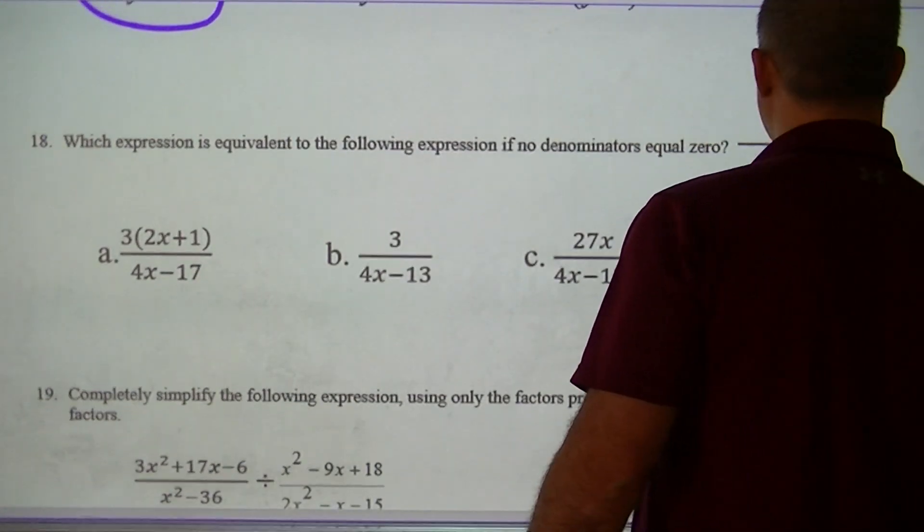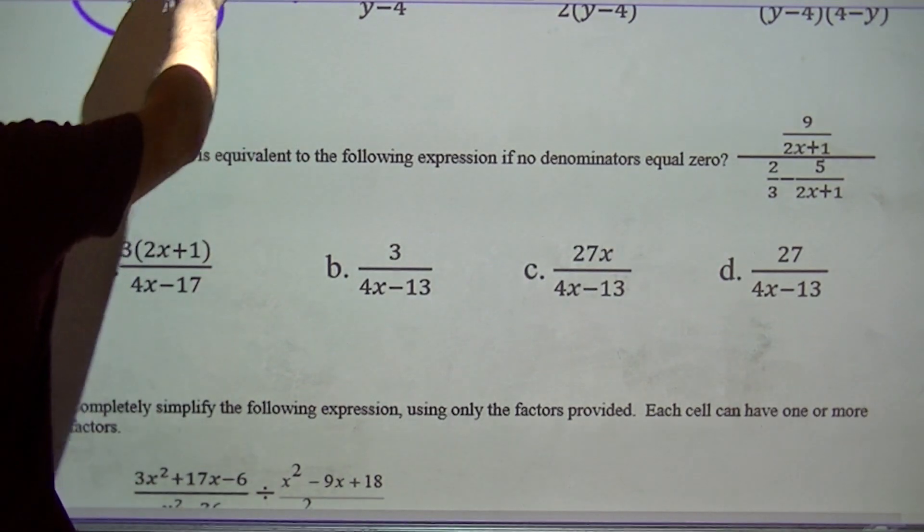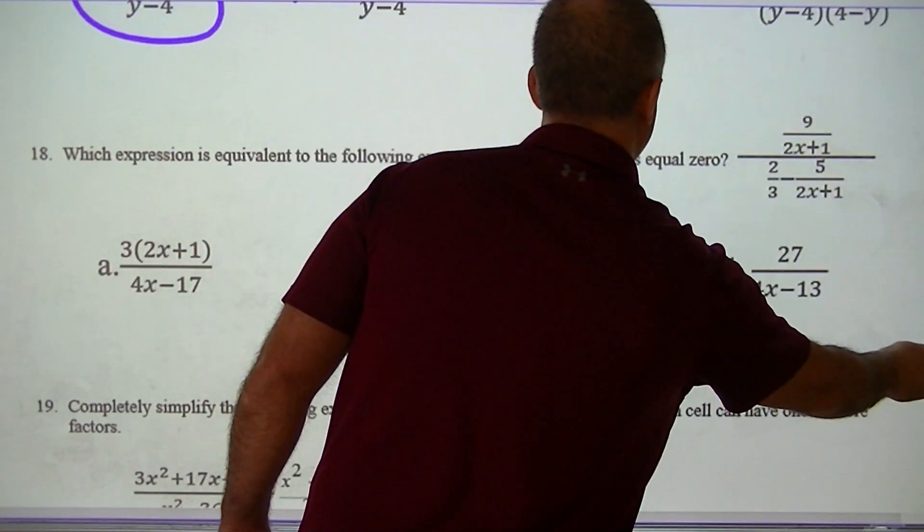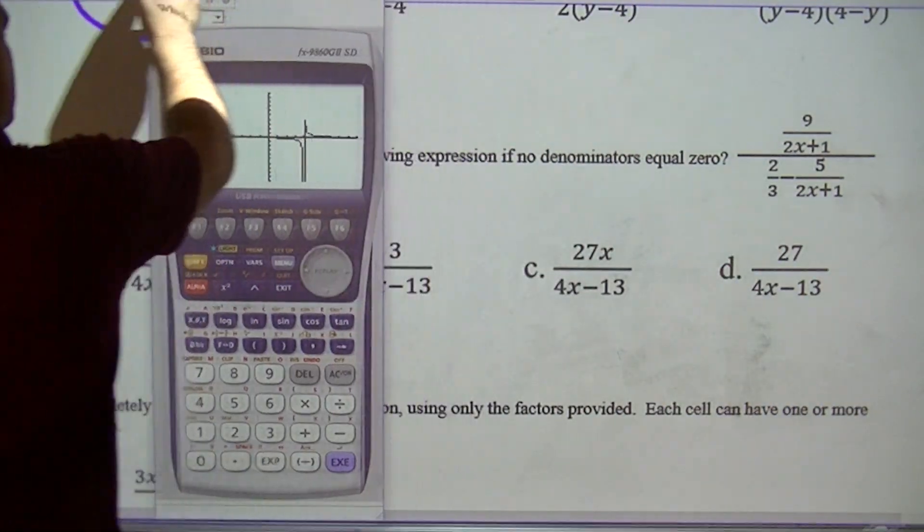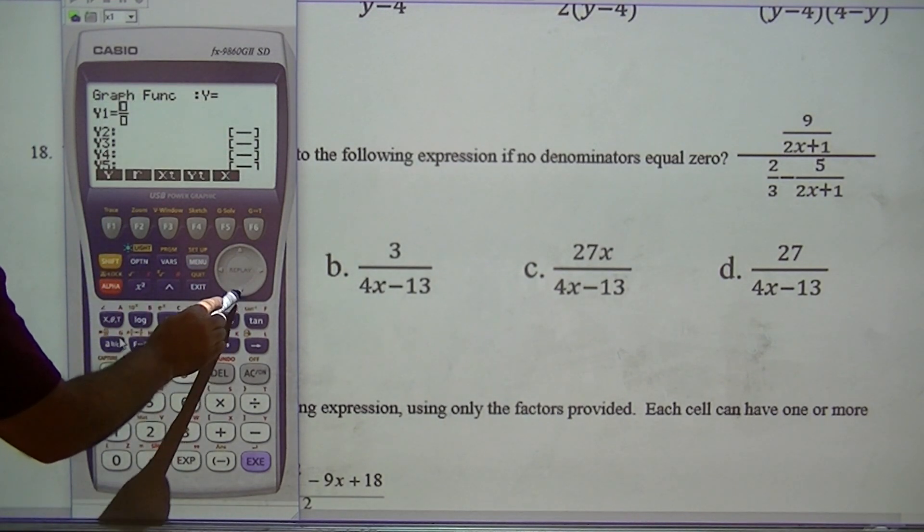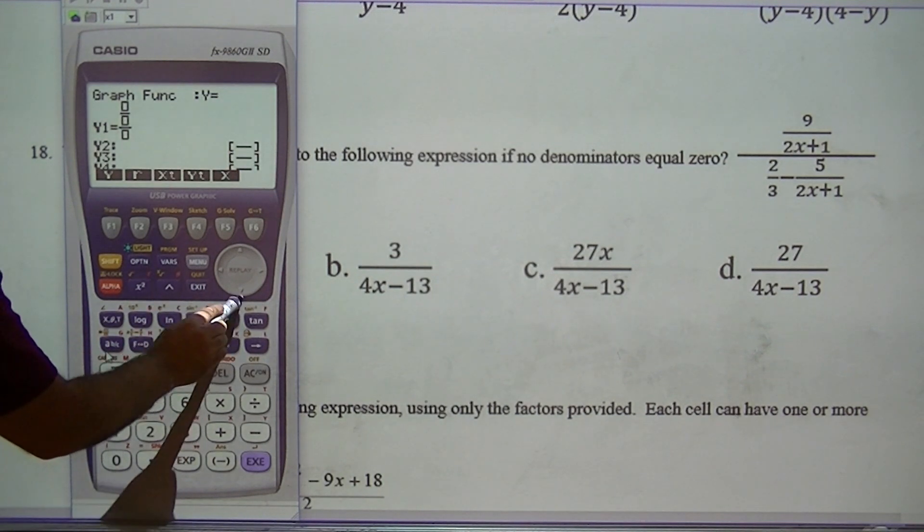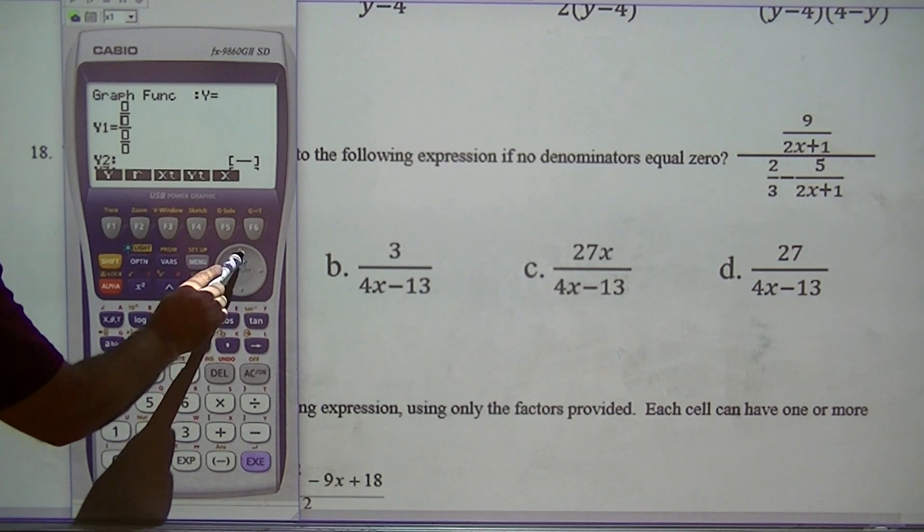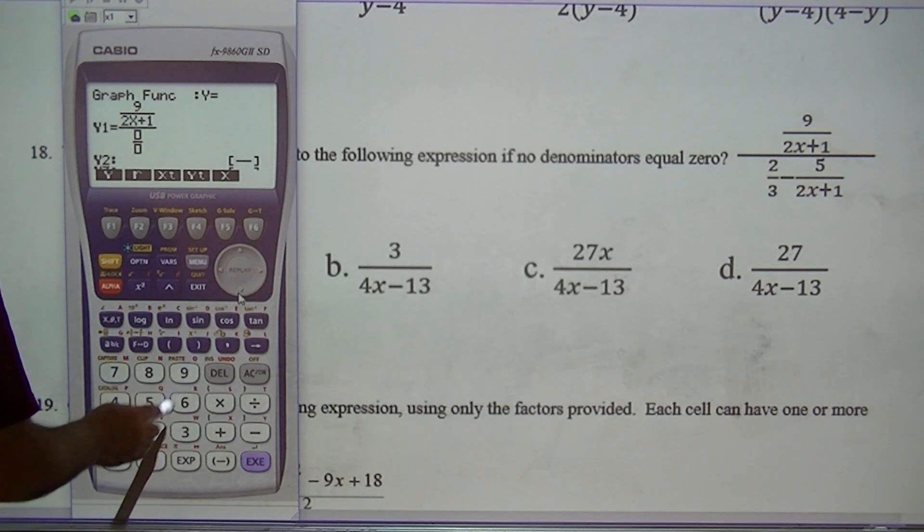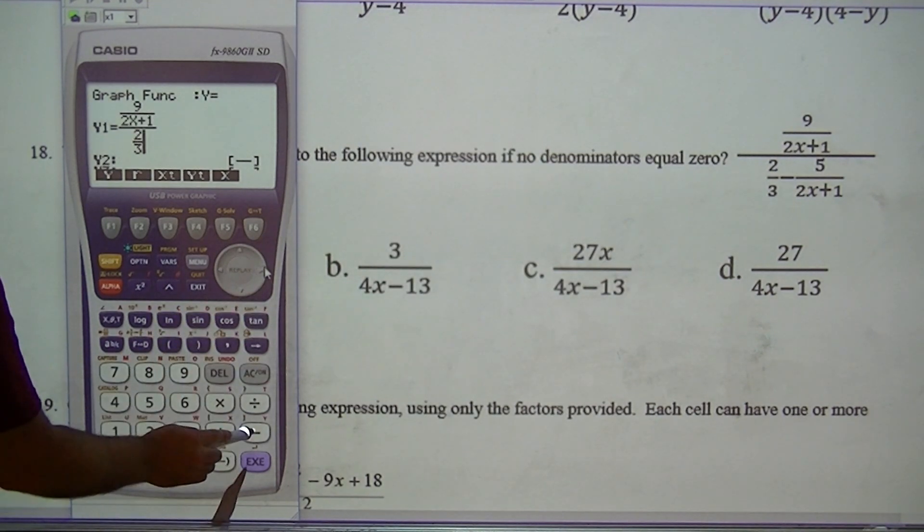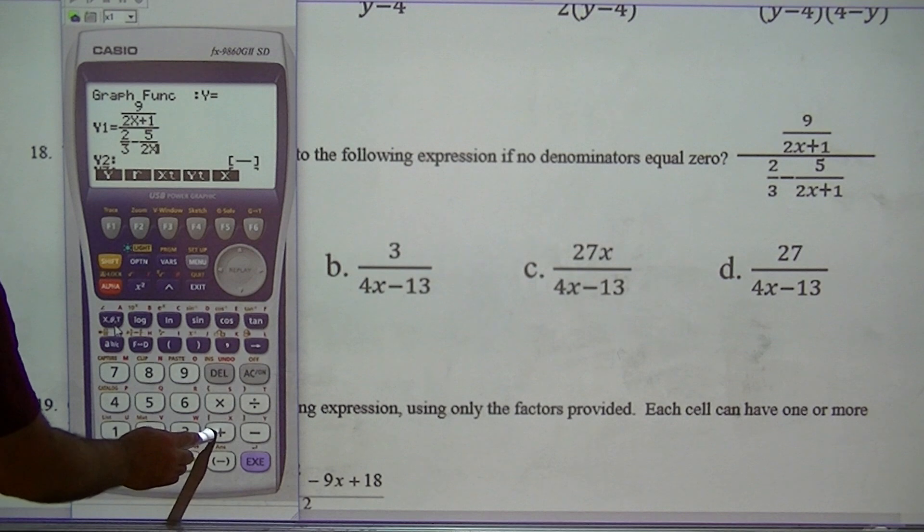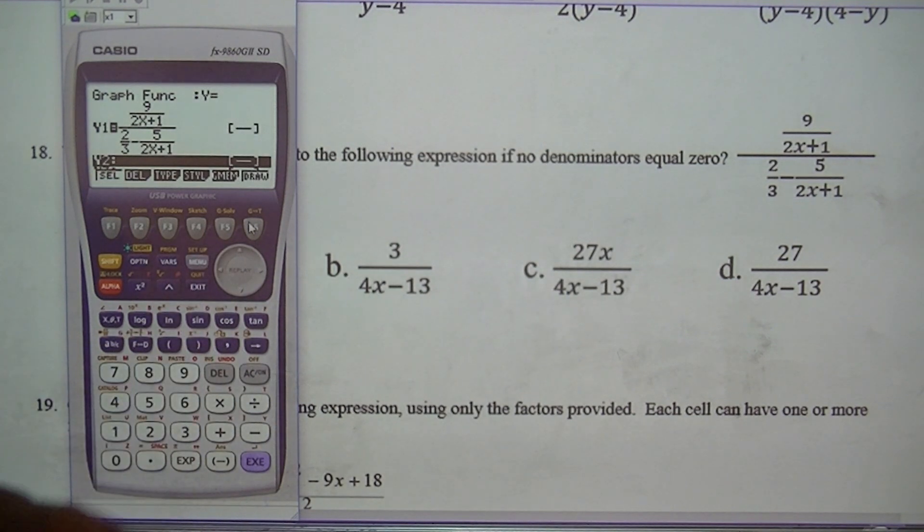Moving on to this problem. That's like a double fraction. So the way I would type that is I would go fraction up top. Go all the way to the bottom and put a fraction down there. So I've got 9 over 2x plus 1. Down here I've got 2 thirds. Hit over, minus, fraction button, 5 over 2x plus 1.